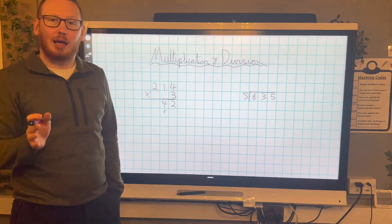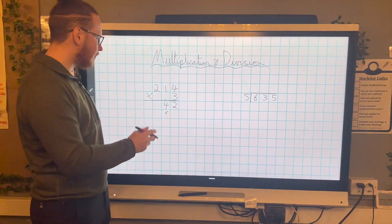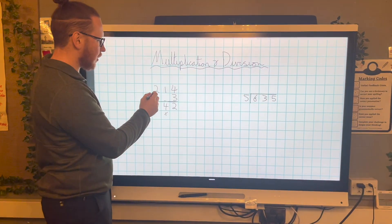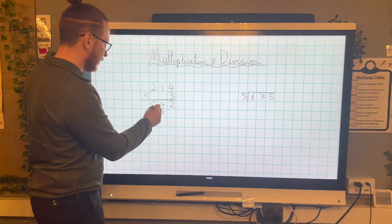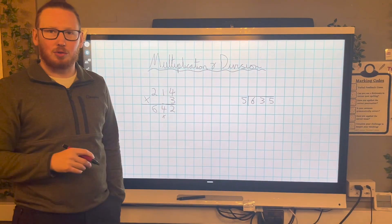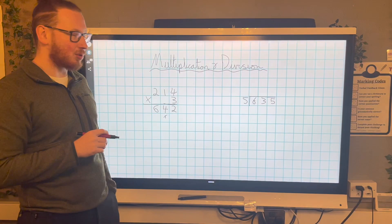Last one. I'm going to look in my hundreds column. I've got a digit of two. So two times three is six. 214 times three is 642.